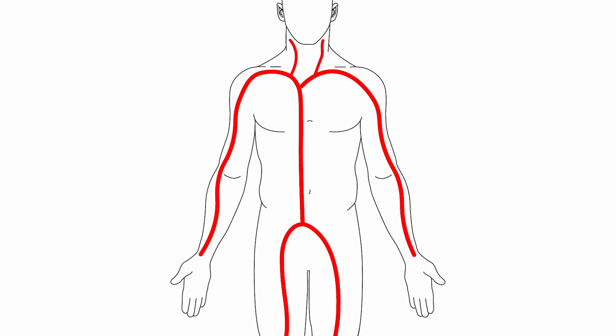Depending on the procedure, there are various access points that we use, including the groin, the neck, and various locations throughout the body to be able to get to the regions that we need to get to — all done through a very small incision.